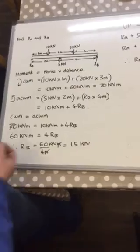If you want to be really thorough, you could take moments around this point which would then calculate Ra and then use this as a check to make sure you've got the right answer.